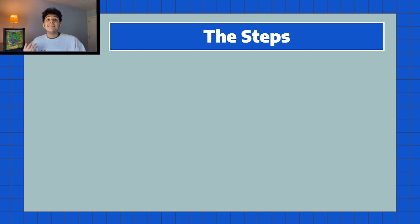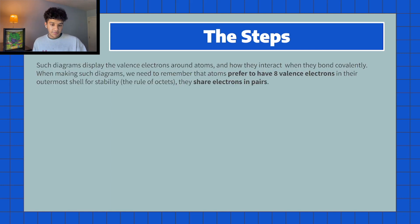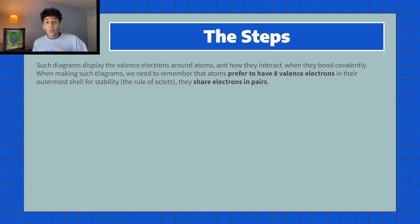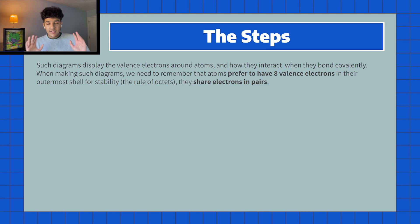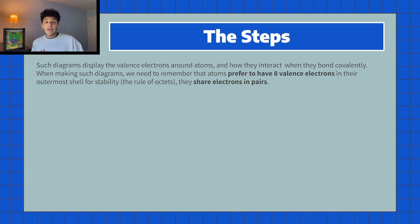Now I wanted to go over the steps to create a Lewis dot structure. The first thing to know is that when representing a covalent bond, every atom wants to have eight valence electrons. The exceptions to this are hydrogen and helium — hydrogen only wants two — but everything else wants eight valence electrons, because that's what puts them in their stable state and makes them happy.